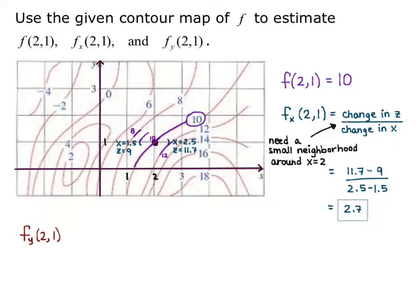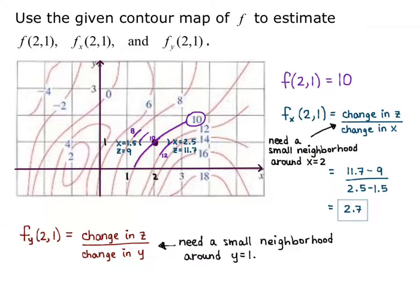Now I want the partial derivative with respect to y at the point (2,1). It follows the same pattern. It's the change in z over the change in y because I'm doing the derivative with respect to y. So this will give me the slope of the ground if I walked north from that point. I need a small neighborhood around y equals 1, so I'm going to go up and down from my point. I'll go up half a point and down half a point. So I have y equals 1.5, and it looks like the contour line that goes through that would be about z equals 9.